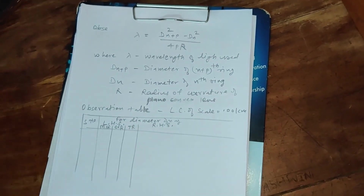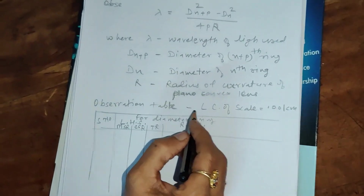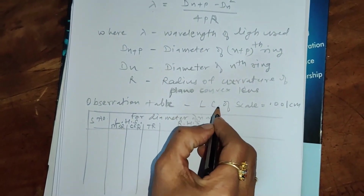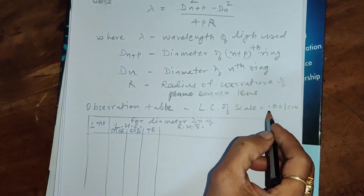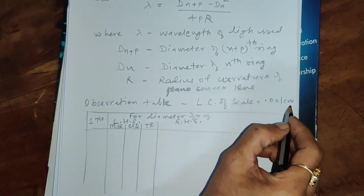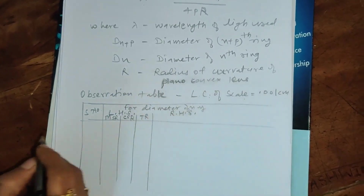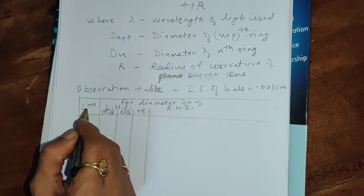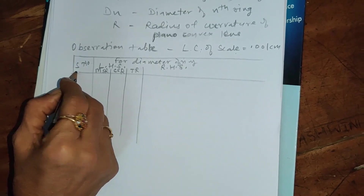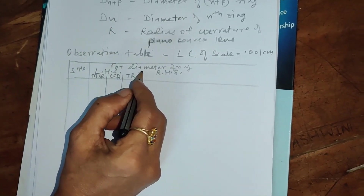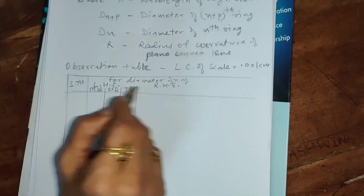Now, the observation table. While writing the observation table, first of all you have to write the least count of the scale, which we have determined as 0.001 centimeter. In this table, the first column, as usual, is the serial number. This table is for determination of the diameter of the rings.